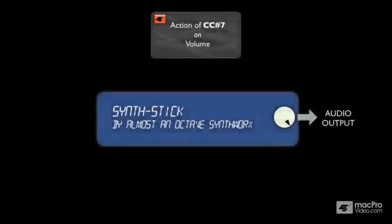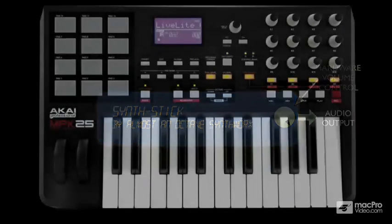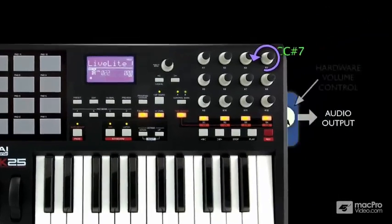When you send CC7 messages to a MIDI instrument, what you're doing is adjusting an internal volume control that's completely independent from the unit's hardware volume control. As we saw in the previous video, there is no physical control traditionally or by default associated with CC7, so I'll be using the knob on this keyboard controller to generate those messages. Here's how CC7 works.